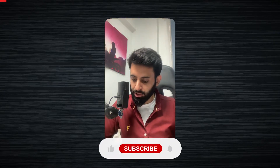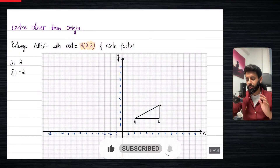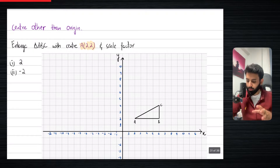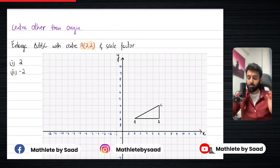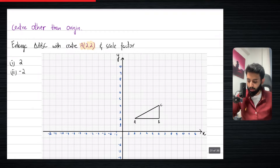Hello everyone, hope you guys are doing well. In the last video we learned how to enlarge an object when the center was the origin. We did four cases: when the scale factor was greater than one, when it was between zero and one, when it was less than minus one, and when it was between minus one and zero.